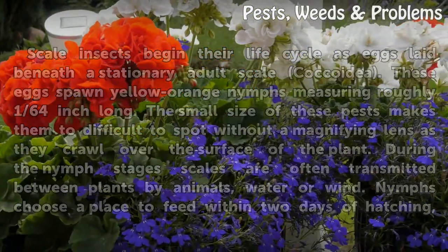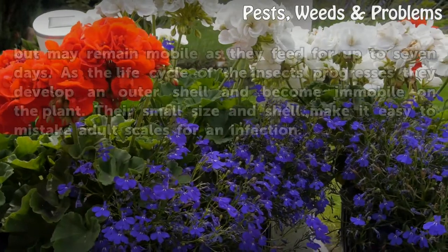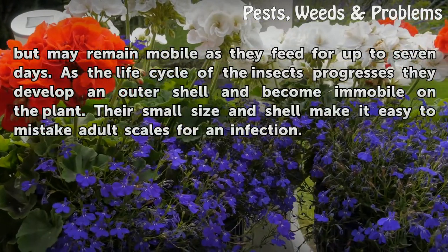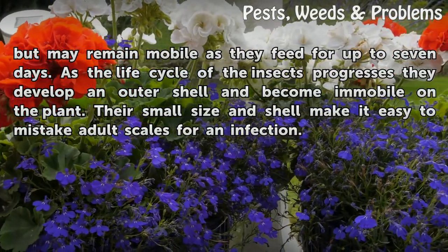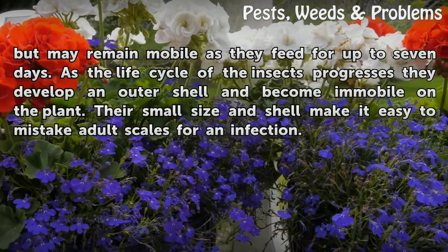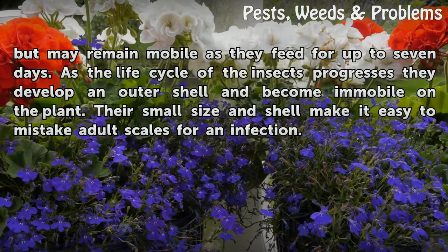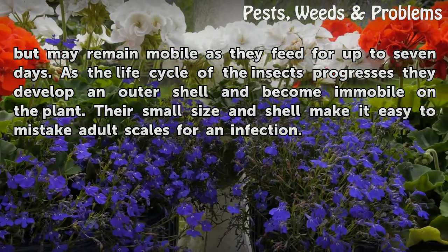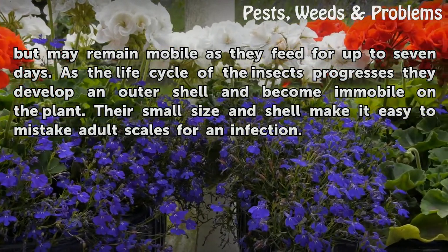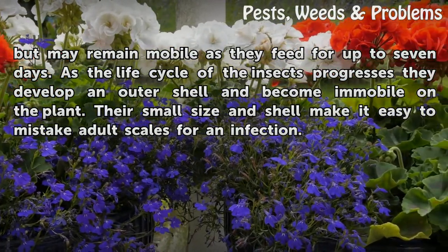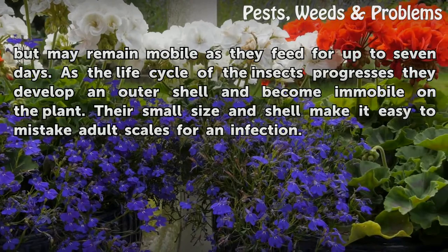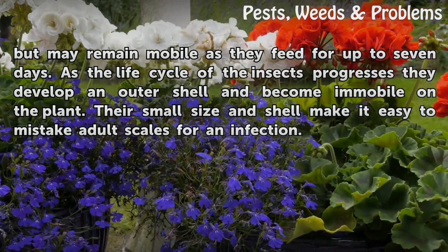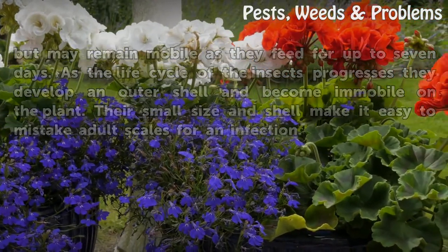Nymphs choose a place to feed within 2 days of hatching, but may remain mobile as they feed for up to 7 days. As the life cycle of the insects progresses, they develop an outer shell and become immobile on the plant. Their small size and shell make it easy to mistake adult scales for an infection.